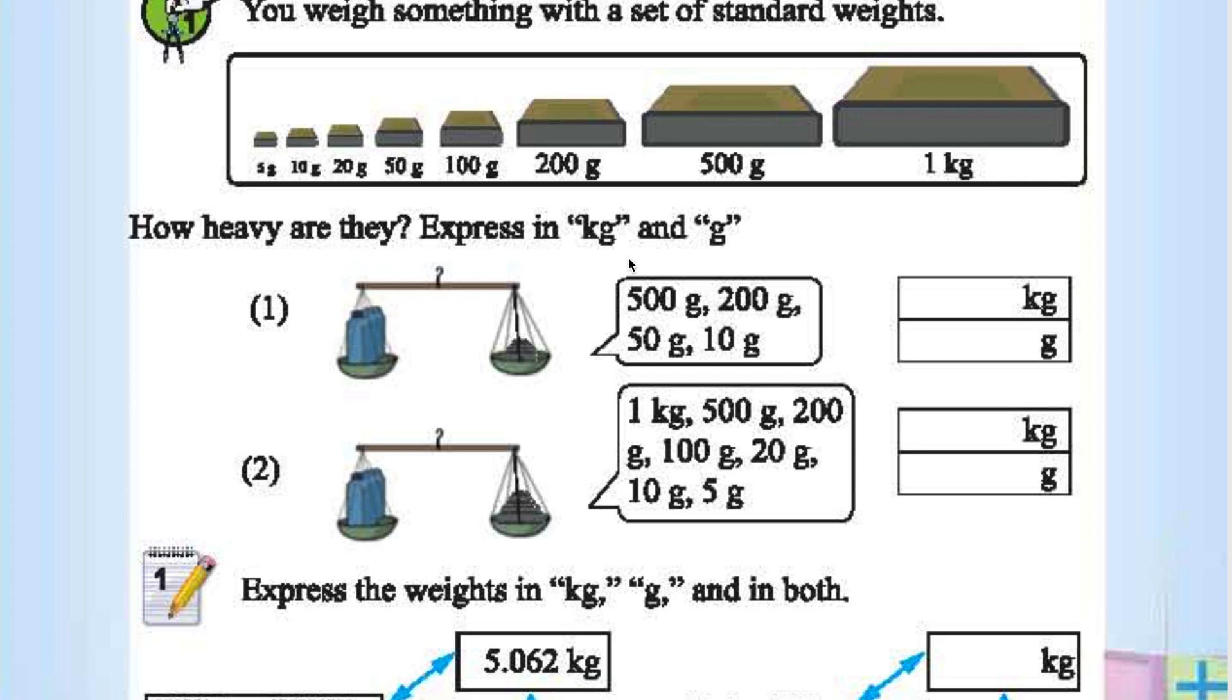How heavy are they? Express in kg and grams. 500 grams, 200 grams, 50 grams, 10 grams. 500 plus 200 is 700, 750 plus 10 is 760.